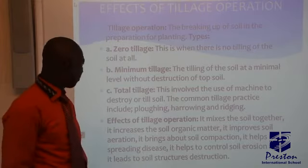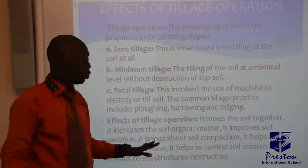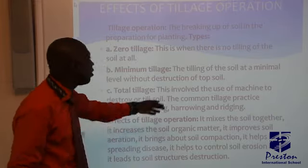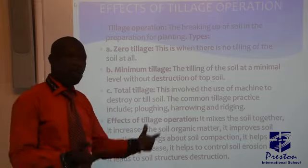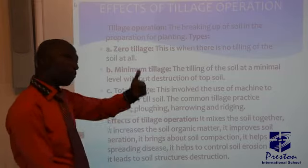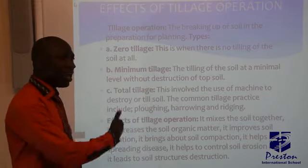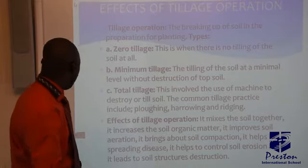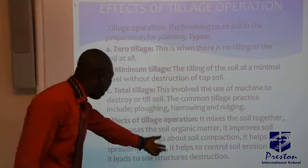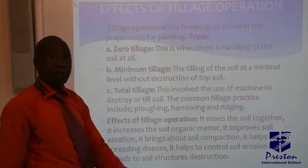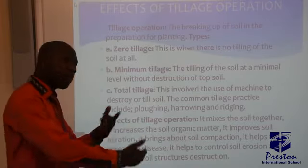When you are talking of total tillage, this involves the use of machines to till the soil — you plough the land, harrow it, then use a ridger to make a ridge. The effects of tillage operations include mixing the soil together, so by the time you use your plough and harrow it helps in mixing the soil very well.